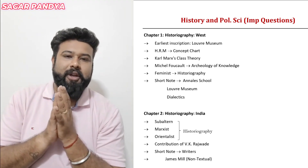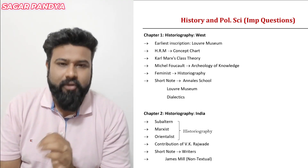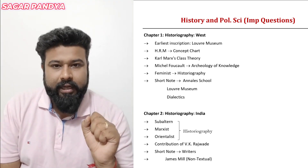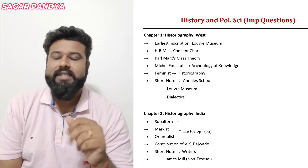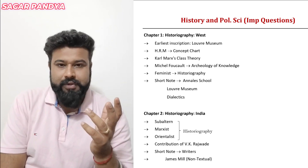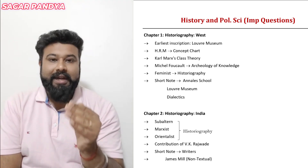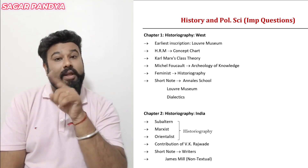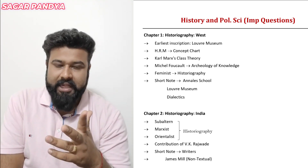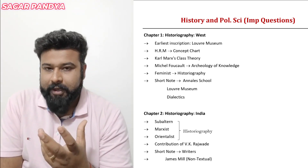In this particular chapter, there are certain important topics that we have to target most of the time. For example, the earliest inscriptions of the Louvre Museum, also HRM — that is Historical Research Method — which is on page number 1, will be very much important in the first chapter.